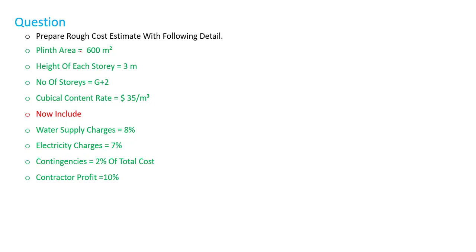Plinth area: 600 square meters. Height of each story: 3 meters. Number of stories: ground plus 2, meaning 3 stories. The cubic content rate is $35 per cubic meter.